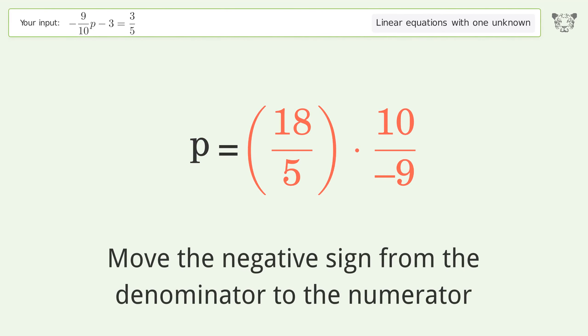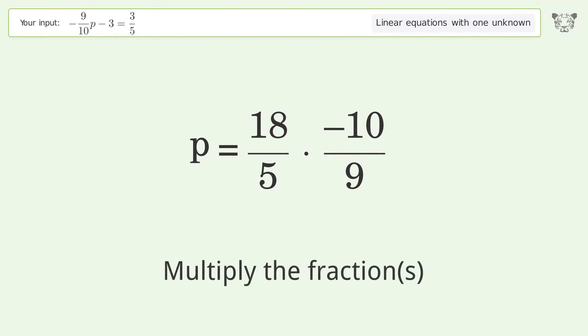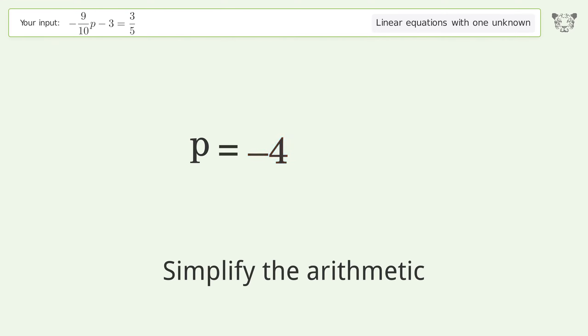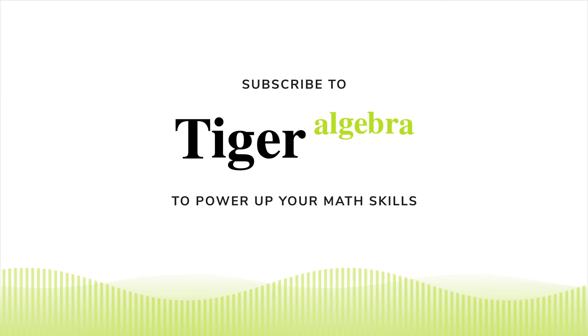Move the negative sign from the denominator to the numerator. Multiply the fractions. Simplify the arithmetic. And so the final result is p equals negative 4.